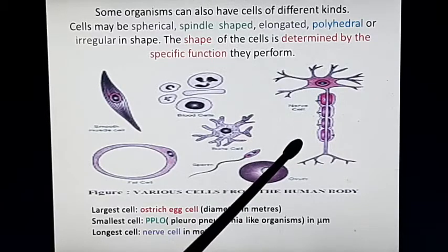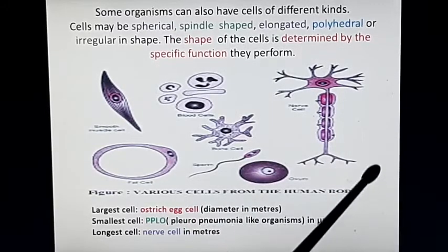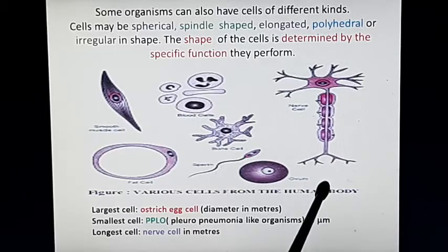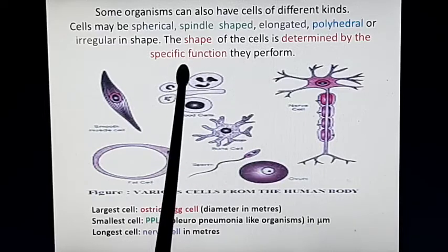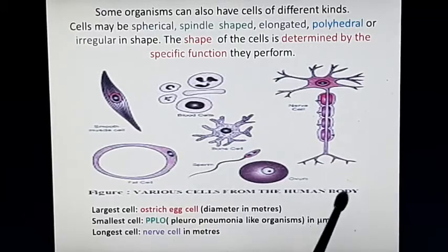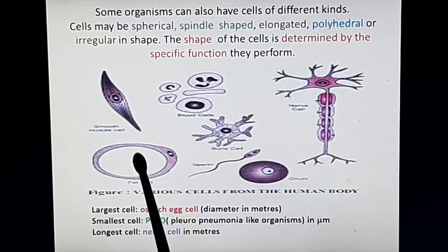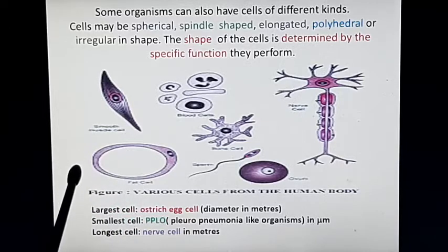It should be mentioned in your answer when discussing different shapes of cells that the shapes of cells are determined by their specific functions — what functions the cell has to perform, its shape is according to that. The size of the cell varies, the shape of the cell varies, and the shape of the cell varies according to the function of that cell.